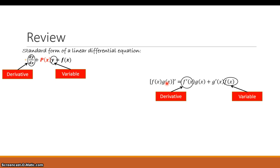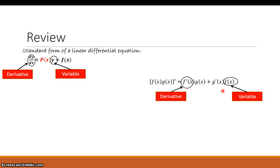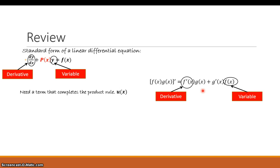So with the product rule you've got a variable and a derivative — the same as with the standard form of a first-order linear differential equation. You've got a variable and a derivative being added together. The difference is that instead of just having a coefficient p(x), you've got g prime(x) with a variable that goes with it, which isn't accounted for in the standard form. So we need a term that completes the product rule.